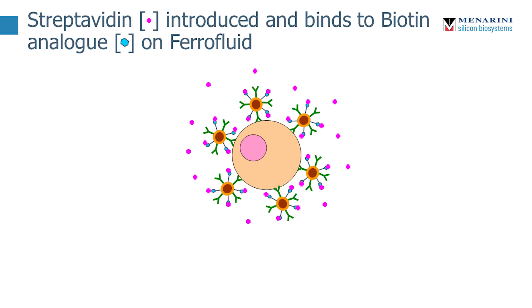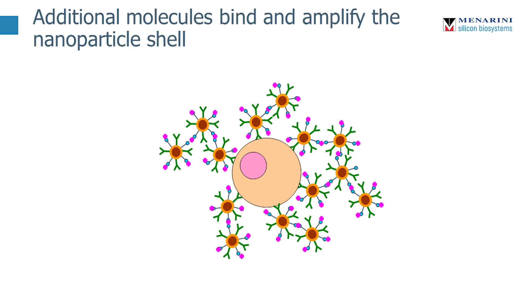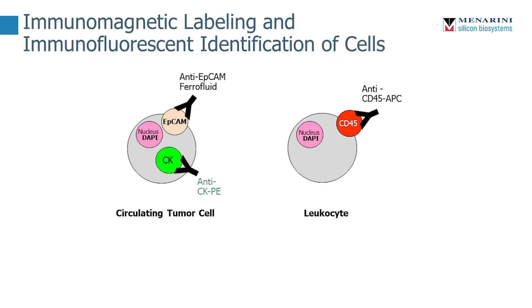Streptavidin is then introduced and it will bind to the biotin analog on the ferrofluid. Additional molecules of ferrofluid will bind to these molecules and amplify the nanoparticle shell. In effect, this takes a cell that may have a relatively low or rare amount of an antigen — in this case EpCAM — and creates a large shell, kind of like the casing of a golf ball, around the outside. We can then use this to magnetically isolate these cells and wash off contaminating cells, leaving a relatively pure specimen. We then stain the remaining cells and differentiate circulating tumor cells from contaminating leukocytes. In this circulating tumor cell kit, we use an anti-EpCAM ferrofluid with an anti-cytokeratin PE conjugated antibody, and for leukocytes we use anti-CD45 as an exclusion marker.